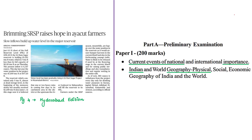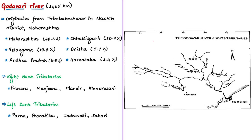The next news article is titled 'Brimming SRSP Raises Hope in Eye-Cut Farmers.' 'Brimming' refers to the reservoir nearing full storage capacity of the Sriram Sagar Project (SRSP), and 'eye-cut' refers to the command area — the irrigated land of the dam. The water level has been gradually rising in the Sriram Sagar Project, located in Nizamabad district of Telangana, and is close to reaching the full reservoir level.